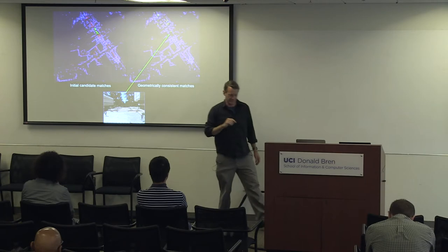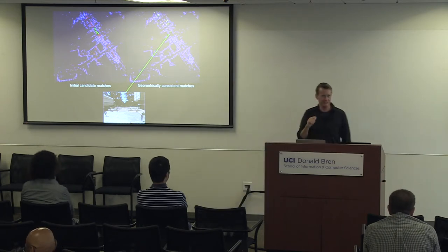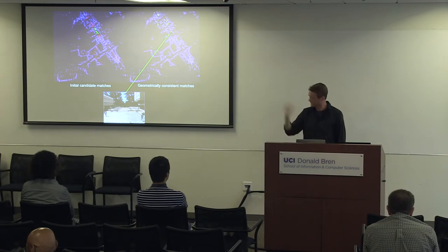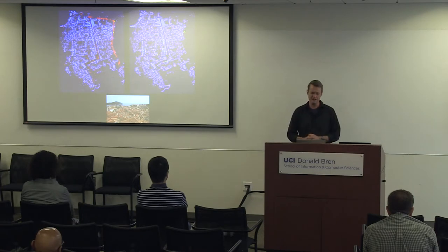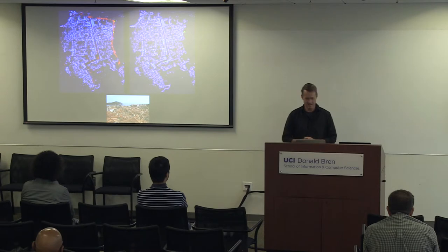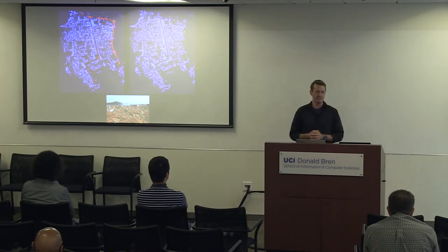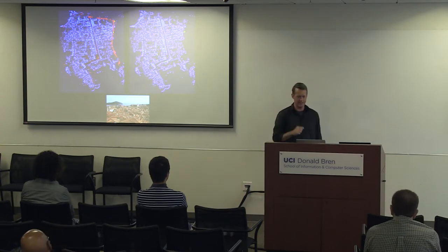The red circle is our estimate of where a photo was taken and the green X is its precise position. This works not only for our photos of UCI. Here's another example: a 3D model of Dubrovnik, a medieval city by the sea, built entirely from tourist photos downloaded from Flickr. We can build up these large geometric models of locations and, given a new photo, figure out where that photo was taken.